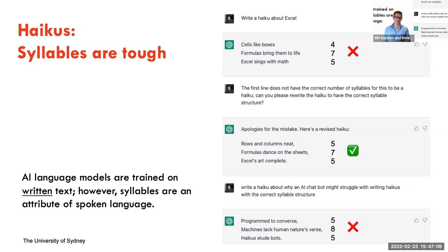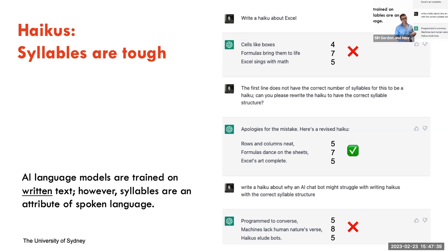I told ChatGPT this and asked it to make one with the correct syllable structure — and it did a good job. I then asked it to write a haiku about why an AI chatbot might struggle with writing haikus with the correct syllable structure. It wrote one that's pretty good: 'Programmed to converse / Machines lack human nature's verse / Haikus elude bots.' But it's not a haiku. Because AI language models are trained on written text, syllables are an element of spoken language the model could never learn — the model can't do what it doesn't know how to do.